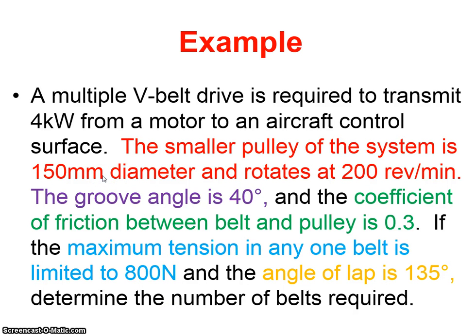A multiple V-belt drive is required to transmit 4kW from a motor to an aircraft control surface. The smaller pulley of the system is 150mm diameter and rotates at 200 RPM. The groove angle is 40 degrees and the coefficient of friction between belt and pulley is 0.3. If the maximum tension in any one belt is limited to 800N and the angle of lap is 135 degrees, determine the number of belts required. We can use this information to calculate the required power.